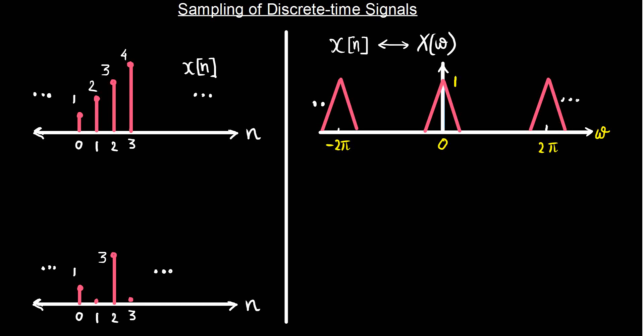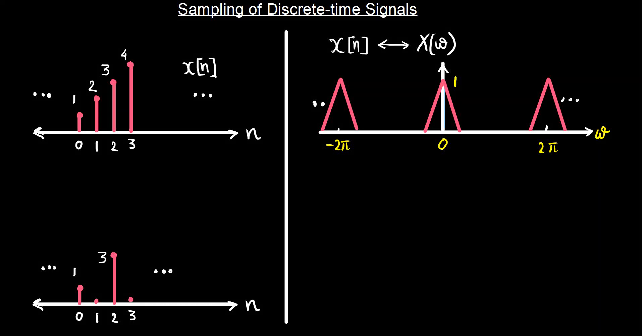In the previous module we have seen the process of discretization of continuous time signals. Any discrete time signal would have a Fourier representation that is unique in the range of 0 to 2π, just because omega is going to repeat after 2π. You can take any range — from minus π to π or from 0 to 2π — and within that 2π range the Fourier transform is unique and repeats after 2π.